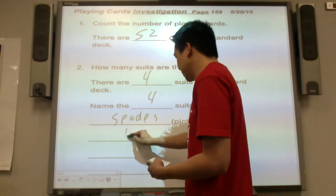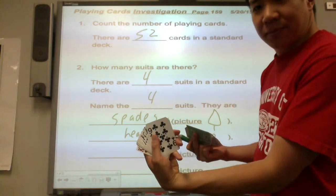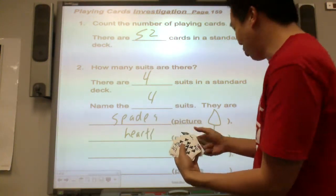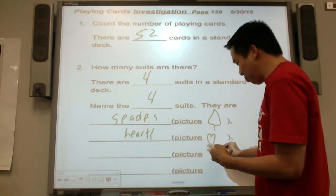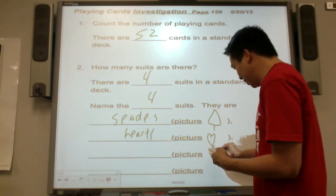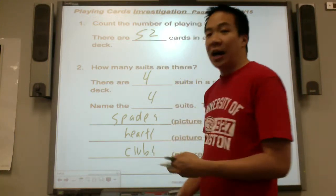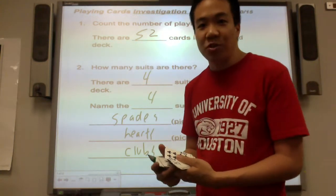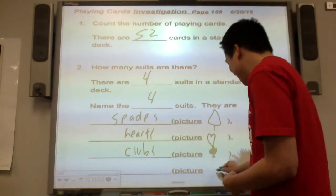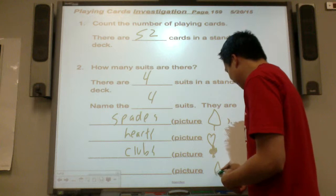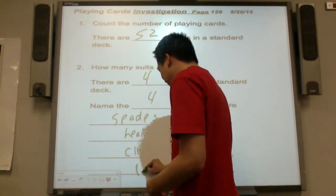Next one, hearts. Next one, I used to call this when I was a kid broccoli. So all my friends thought I was an idiot. They said, oh my god, it's not broccoli. Why do you keep calling it broccoli? So this is called clubs. I do not know why it is called clubs. It should be called broccoli. And last but not least, diamonds. That's a diamond.